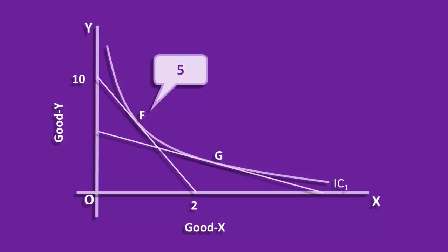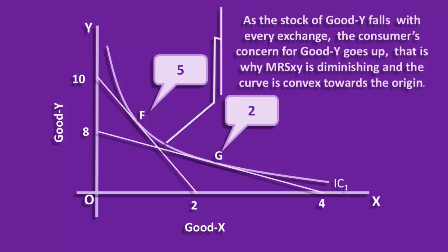Similarly, fix the point G. It is to the left of point F. Draw a tangent to that point. It cuts the Y-axis at 8 units and the X-axis at 4 units. Marginal rate of substitution of X for Y at the point G is 8 by 4. That is 2. So, marginal rate of substitution of X for Y is diminishing from 5 to 2 when the consumer descends from F to G. As the stock of good Y falls with every exchange, the consumer's concern for good Y goes up. That is why marginal rate of substitution of X for Y is diminishing and the curve is convex towards the origin.